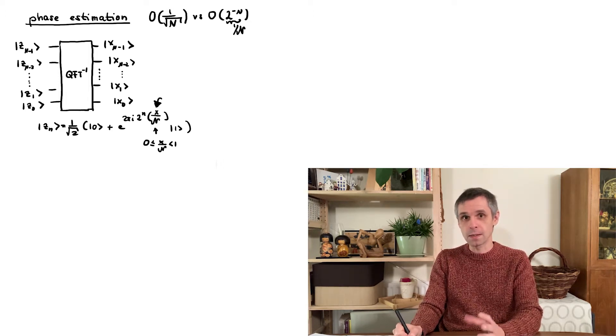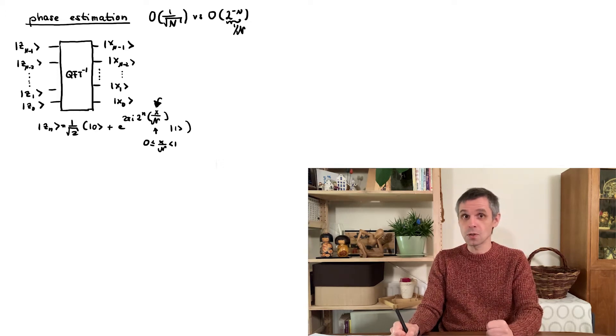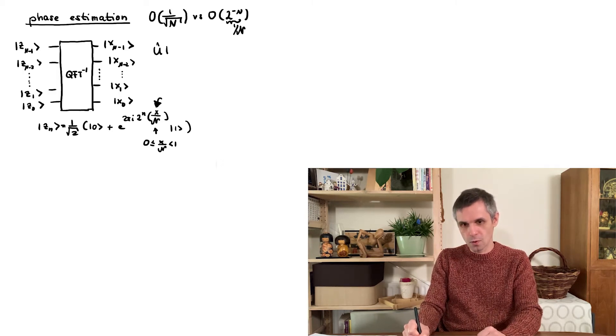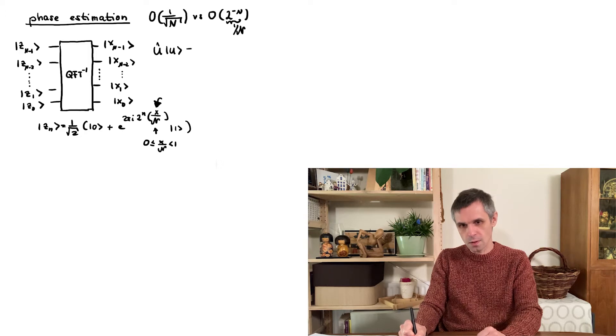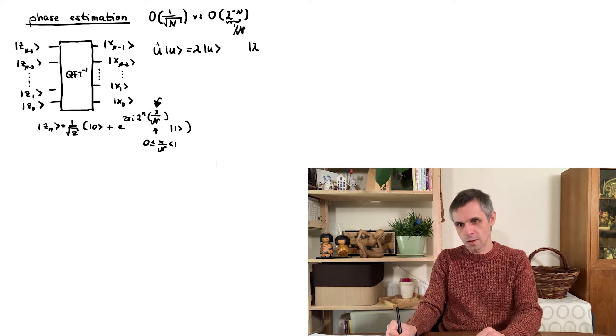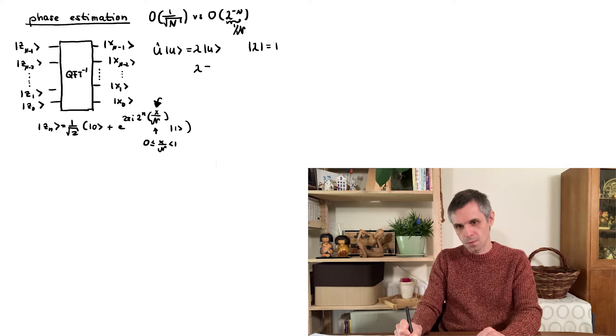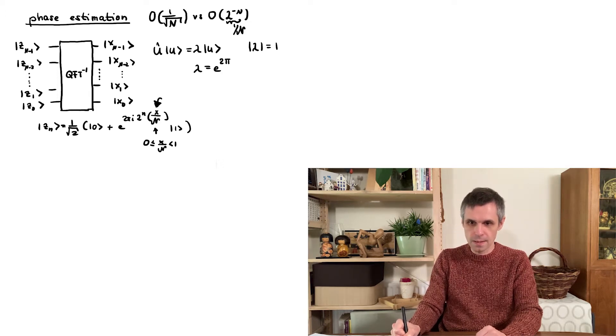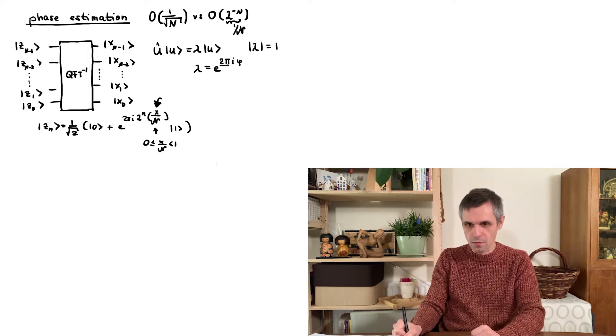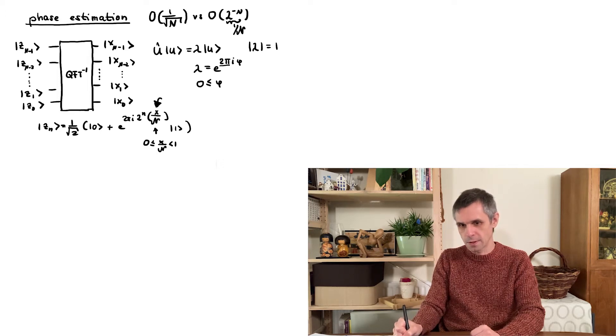So where do complex phases appear in the most general way in quantum mechanics? Well, they appear abundantly in the eigenvalues of unitary operators. So for any unitary operator U, if you look at the eigenvalues lambda, then they are always constrained to be of unit length. And you can then write them using a complex phase in this way here. I've written this here in a convenient form where I pulled out this factor of two pi so that phi can be treated as a number between zero and one. And this is known as the reduced phase.